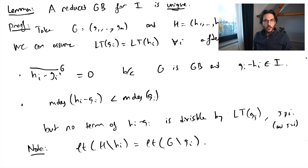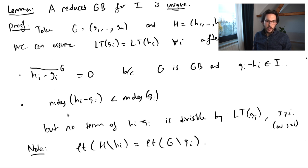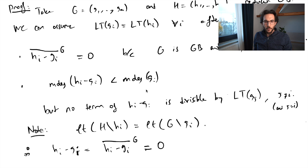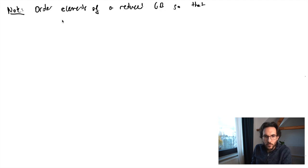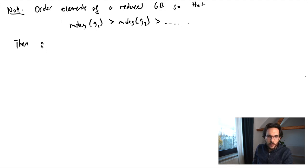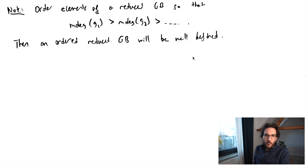So h_i also cannot be divisible by the leading terms of the g_j's. That means when I computed the reduction, I could not have done anything — I did not change the polynomial. The original polynomial was equal to its reduction, which was zero. This is true for every i, therefore h_i equals g_i. We can also make the ordering unique: since we already have a monomial ordering, we order the Grübner basis elements according to descending leading terms. This establishes that each polynomial ideal has a unique ordered reduced Grübner basis with these conventions.